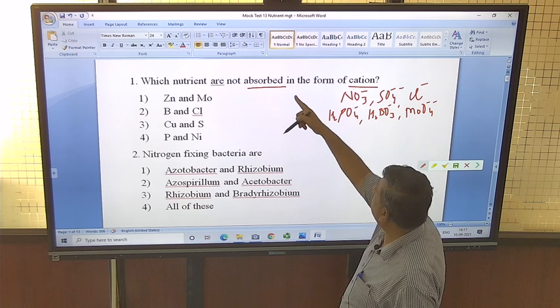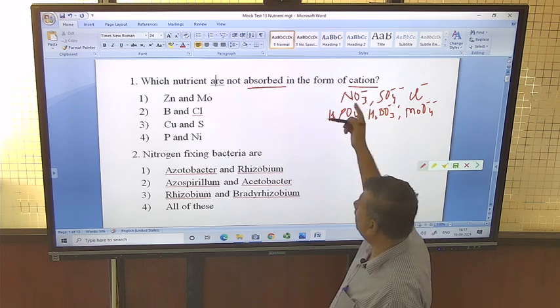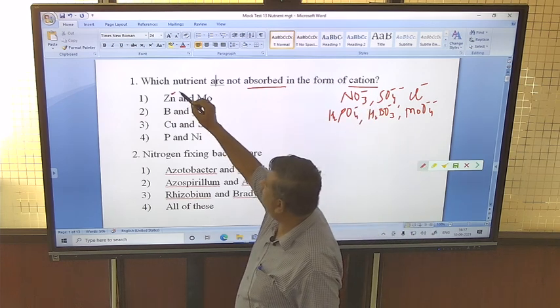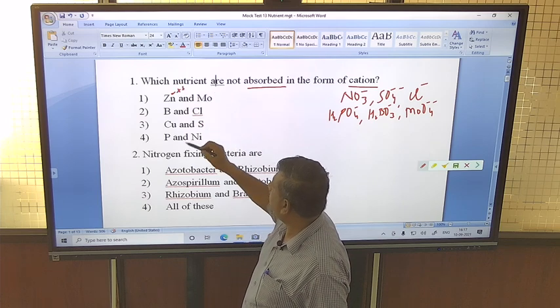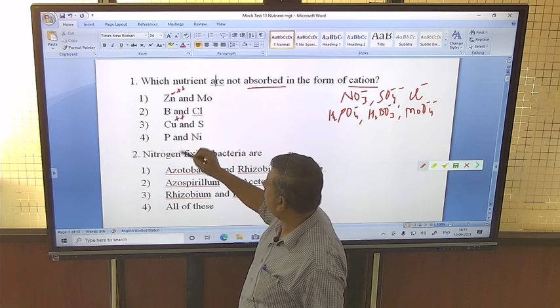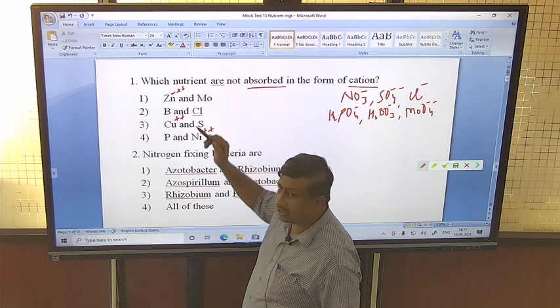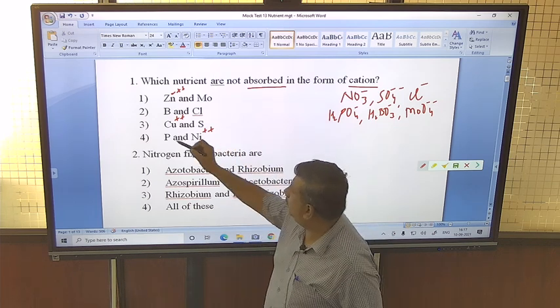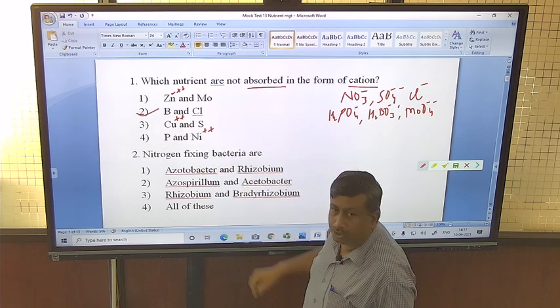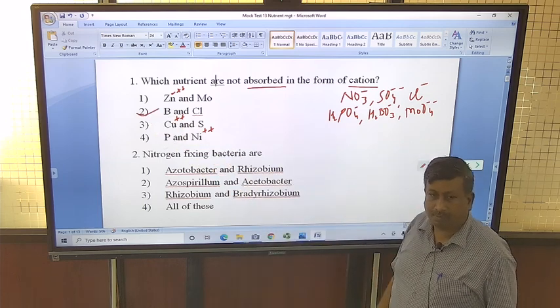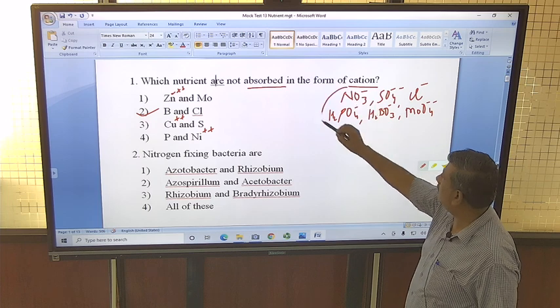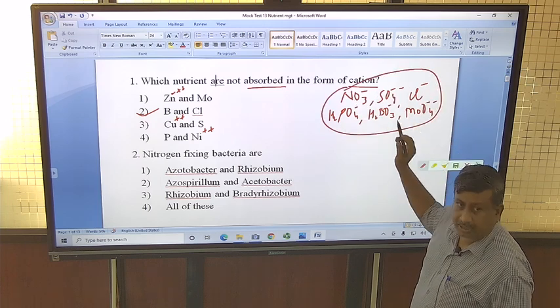These are absorbed in the form of anion. Here question is asked, not absorbed in the form of cation. So zinc is absorbed as Zn2+, copper as Cu2+, phosphorus, nickel as Ni2+. Here, sulphur, chloride, but in combination, if we see, then combination is boron and chlorine. These are absorbed in the form of anion. Such type of questions are solved by making the list.